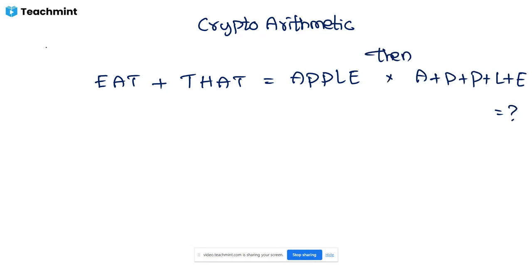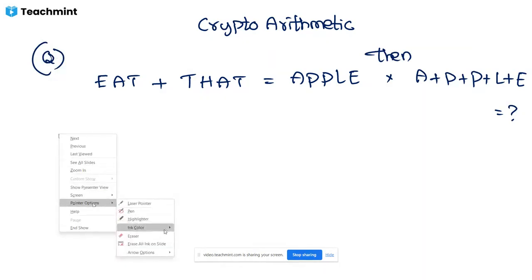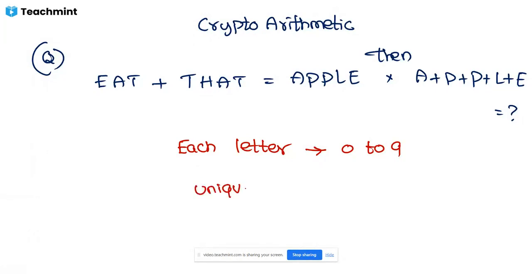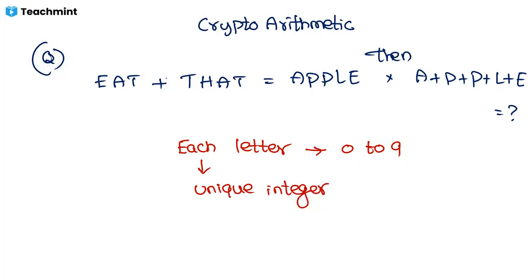Crypto arithmetic problem: EAT plus DOT equals APPLE. Find A plus P plus P plus L plus E. The conditions are: each letter must take a value from zero to nine, and each must be a unique integer — you cannot assign the same value to different letters. EAT is a three-digit number and APPLE is a five-digit number.